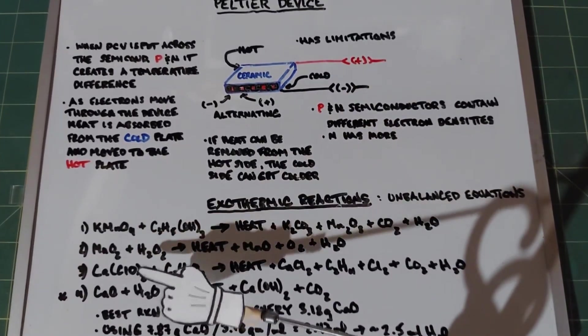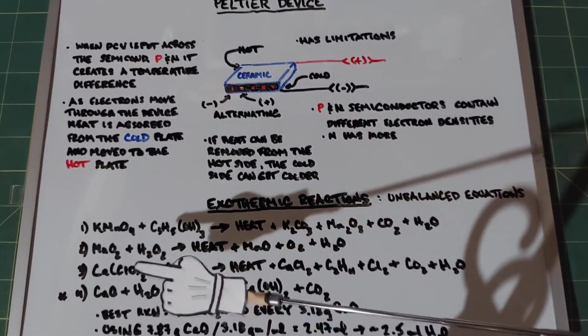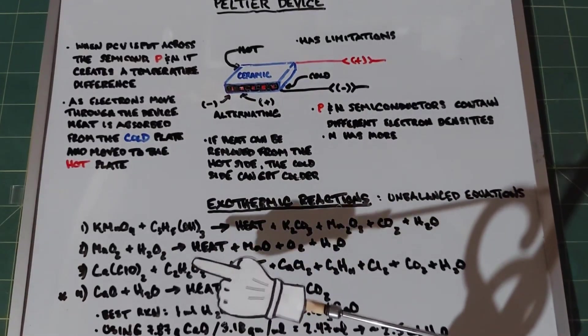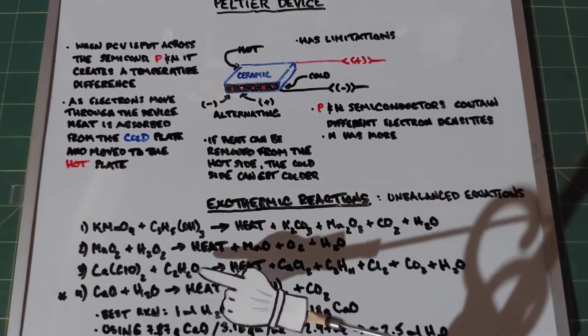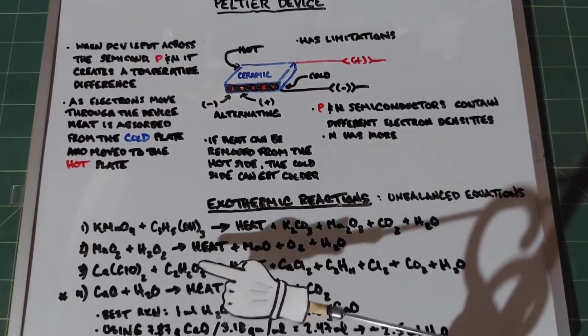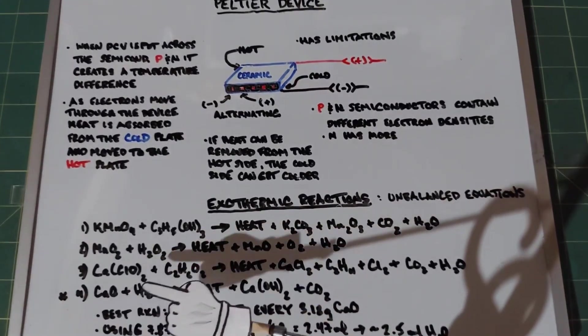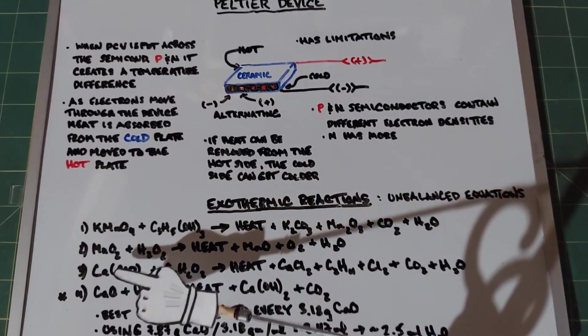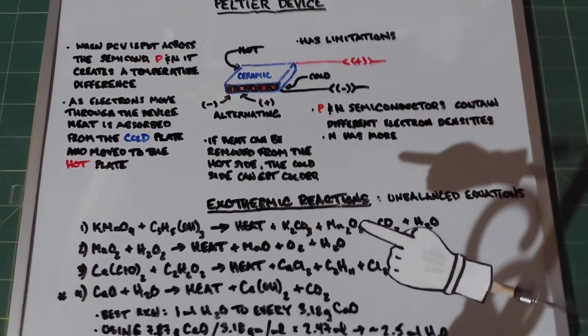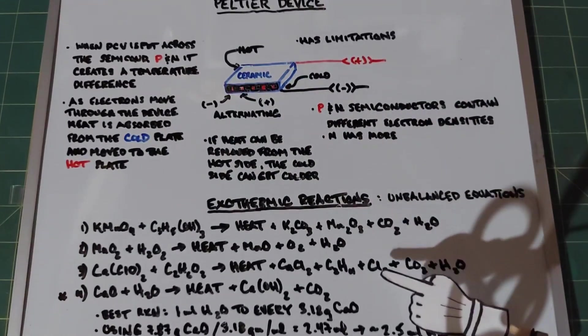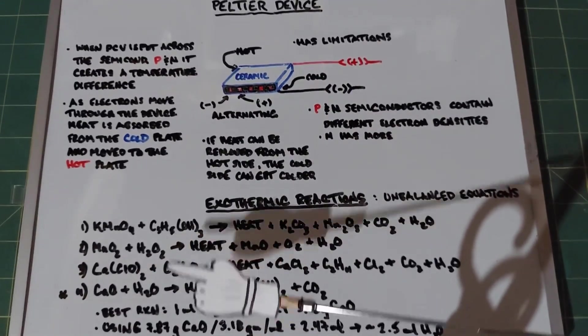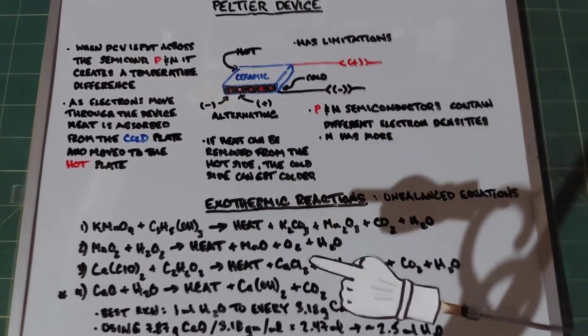The third one is calcium hypochlorite, which is a form of solid pool chlorinator, plus brake fluid. Brake fluid is polyethylene glycol. This formula only has one ethylene molecule, so it's not completely accurate, but we'll use it for this reaction. So we mix calcium hypochlorite with polyethylene glycol and get heat, calcium chloride, C2H4 which is ethylene, chlorine gas, CO2, and water. The last reaction is what we're doing: calcium oxide and water, which yields heat, calcium hydroxide, and CO2.